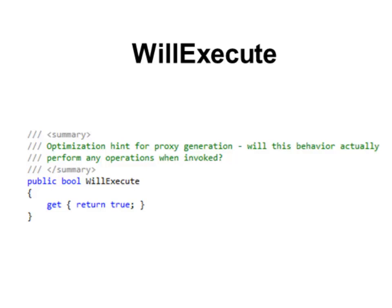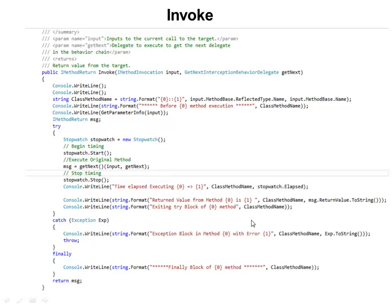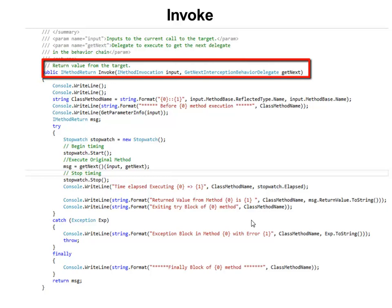There may be a scenario where you check certain configuration and decide that you don't want your behavior to be executed. In that case you simply return false. IInterceptionBehavior has a method called Invoke. This method takes in two parameters of type IMethodInvocation and GetNextInterceptionBehavior delegate, and it returns one parameter of type IMethodReturn.